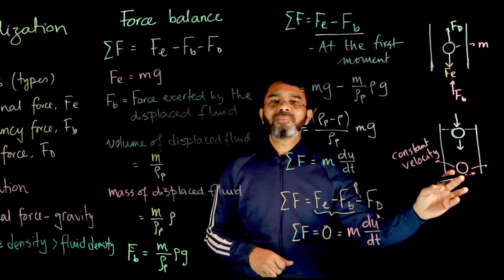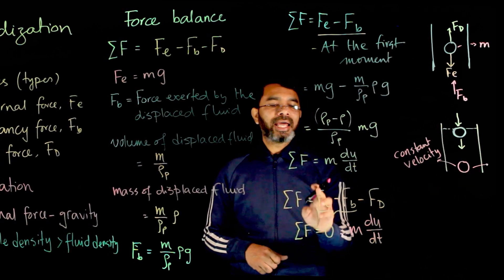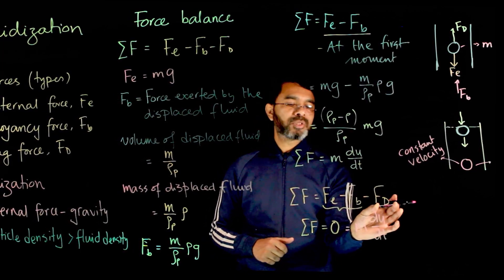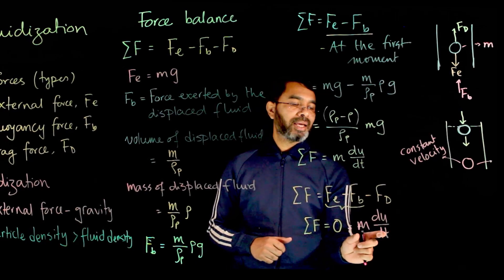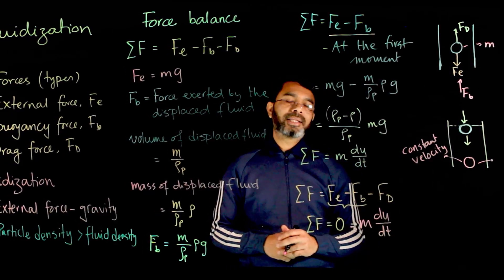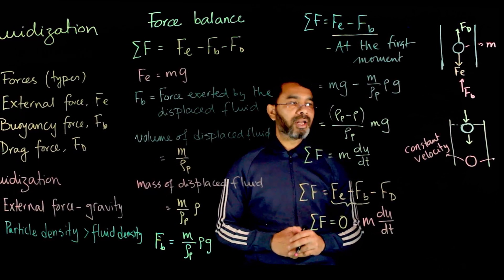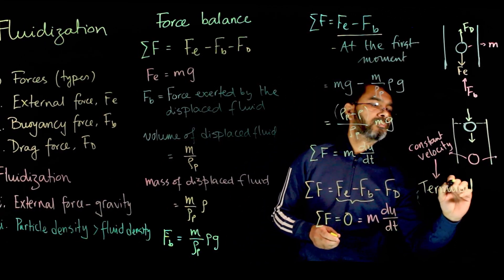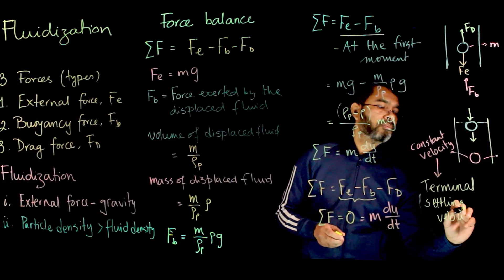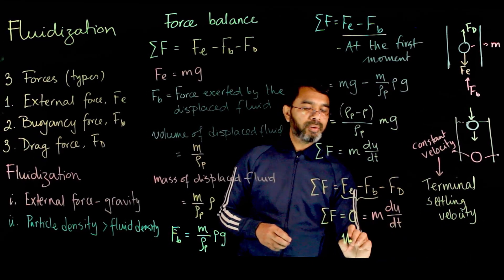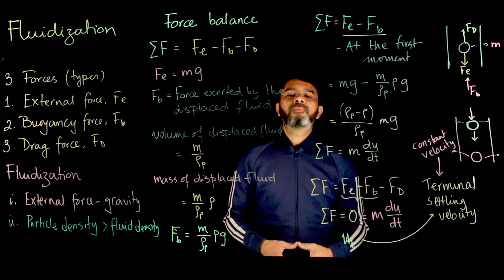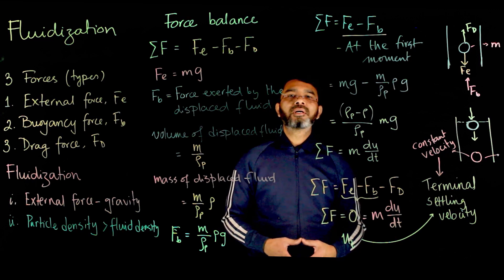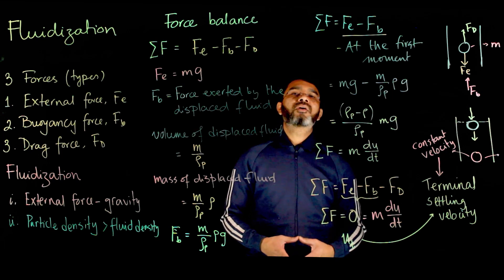When the velocity becomes constant, the drag force becomes constant, and F_e and F_b also do not depend on velocity, so they are constant. When F_d becomes constant, the summation of F becomes zero, acceleration becomes zero, and the solid particle keeps moving at that constant velocity. That constant velocity is called the terminal settling velocity, denoted u_t.